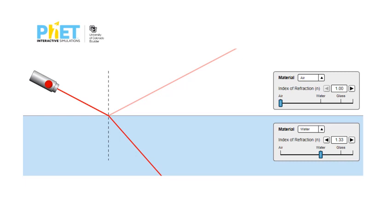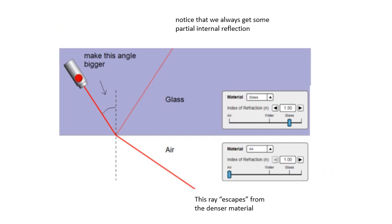PhET simulations are brilliant. And just check them out. There's loads of physics ones, biology ones and chemistry ones as well. And this one here is about refraction. And you can change all of the angles. You can drag that so that you change the angle of incidence there. You can change the materials. You can change the refractive indices. It's fantastic. Have a play with it. It is free. Just do a search for PhET, P-H-E-T. It's the University of Colorado.